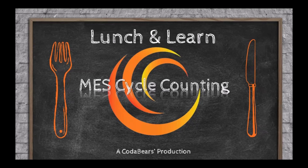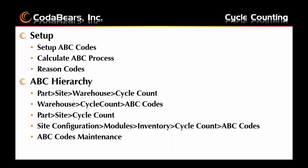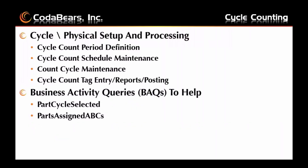Physical and cycle counting in Epicor can help you keep more accurate inventory information. The setup items listed here — set up ABC codes, calculate ABC process, and reason codes — can and probably should be set up ahead of time when you plan to do your cycle counting or physical inventory. Inventory managers or whoever is responsible for inventory accuracy should verify things are set up as you want them before the daily, weekly, monthly, or yearly counting of your inventory.